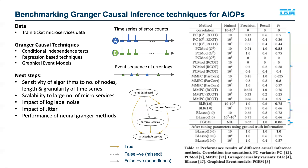We want to continue evaluating these algorithms and also include a new family of methods — neural Granger methods — and compare their performance with all of these algorithms. In this particular dataset, one fault impacted four different microservices, and we want to increase that to consider datasets where one fault can impact 10 or 12 different microservices.